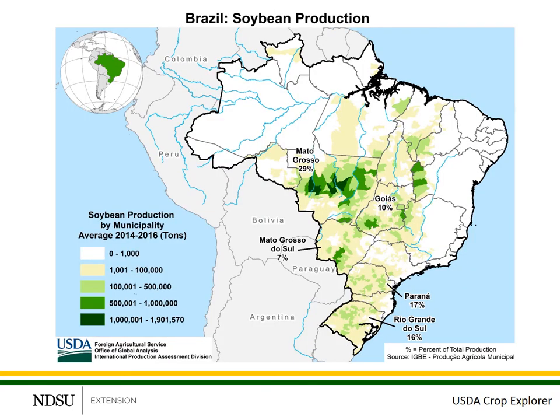This is a map of the major soybean production regions in Brazil. The darker the green color, the more soybeans are produced in that area. As you can see, Mato Grosso, which is the state in the northern growing regions, is the largest soybean producing region in Brazil. However, there are other states that have significant production as well, including Goiás, Mato Grosso do Sul, Paraná, and Rio Grande do Sul.